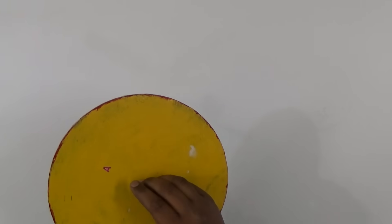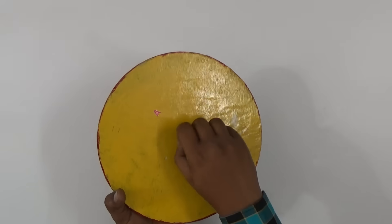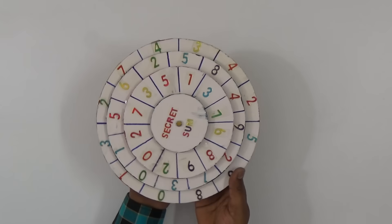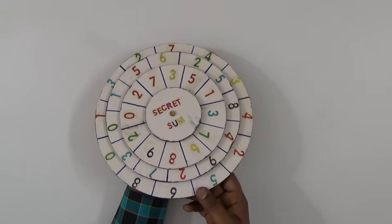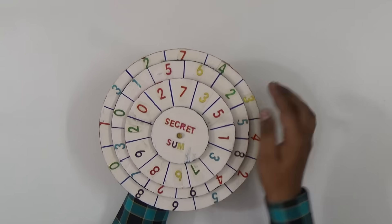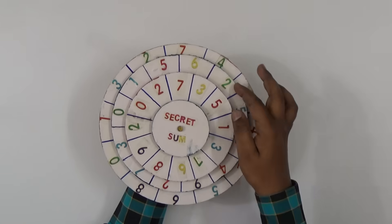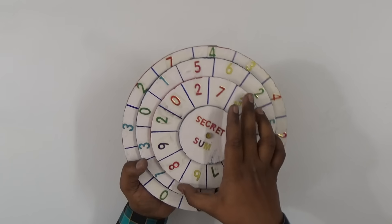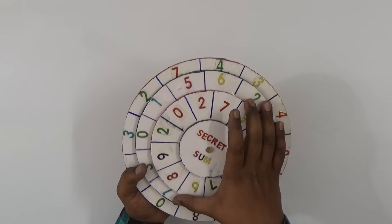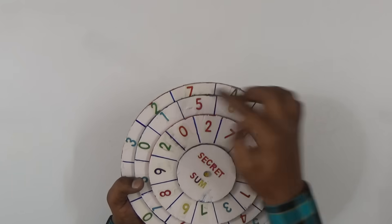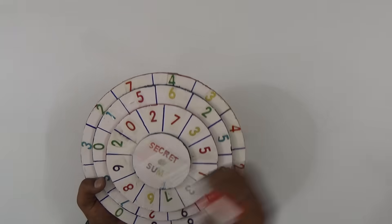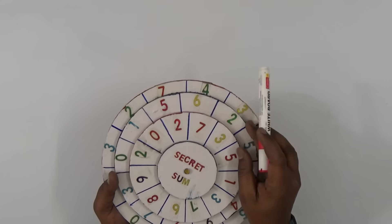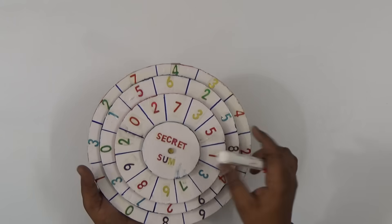This is a secret sum puzzle. Observe here - three disks are there. We need to make the sum the same after rotating. For example, if I kept here this is two plus one, three. Observe here, four plus six plus seven - the sum is not equal. Every straight line, the sum should be same.